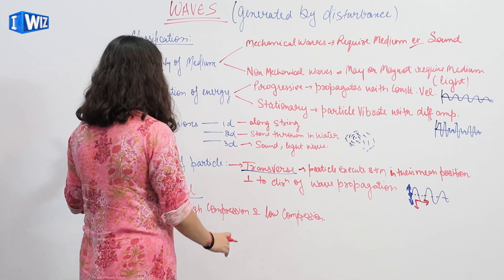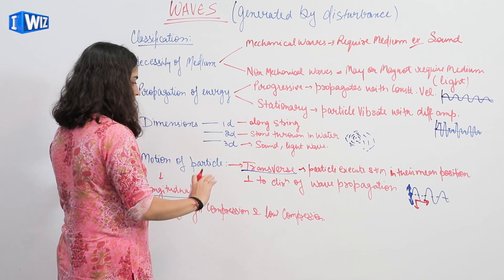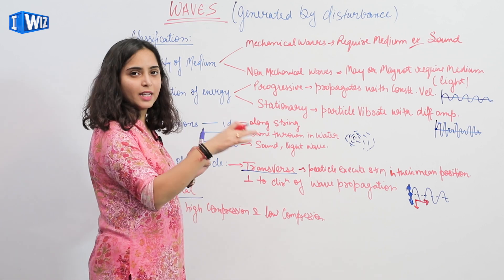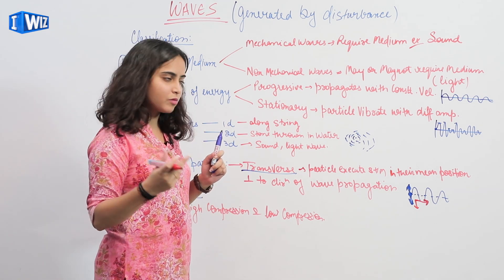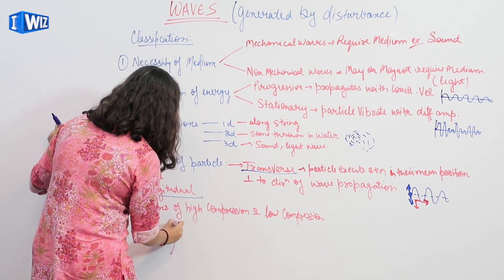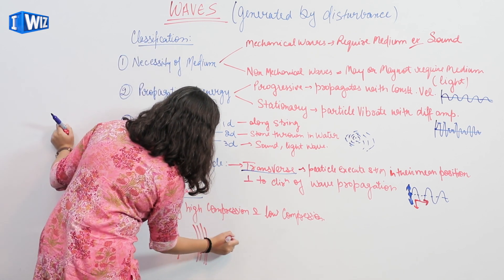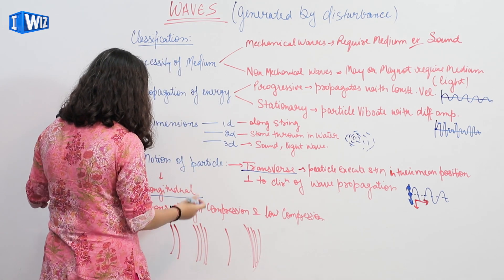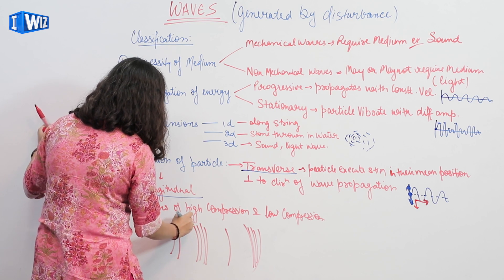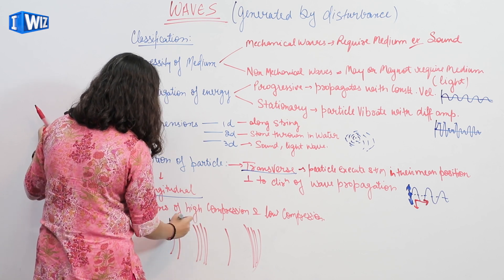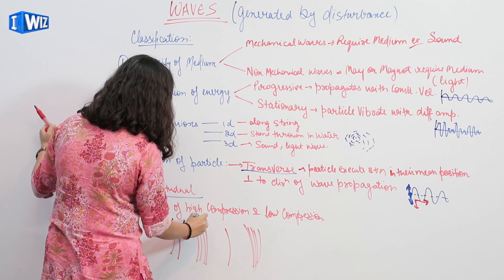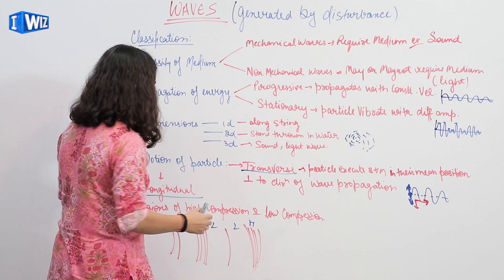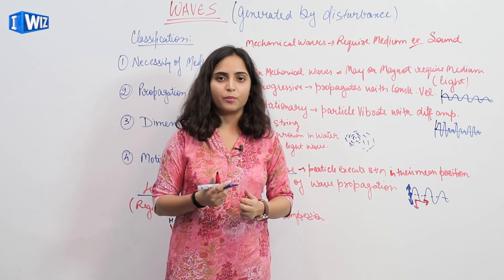In longitudinal waves, the particle travels in the same direction in which the wave is propagating. Here we have regions of high compression and low compression alternating — low compression, high compression, high, low, low, again high — so we have regions divided into high compression and low compression.